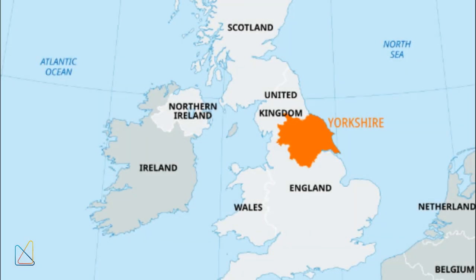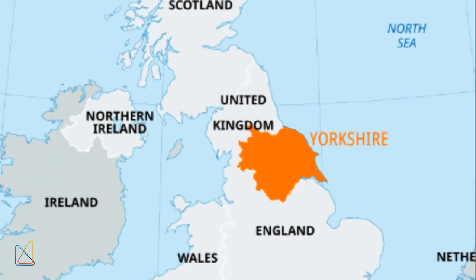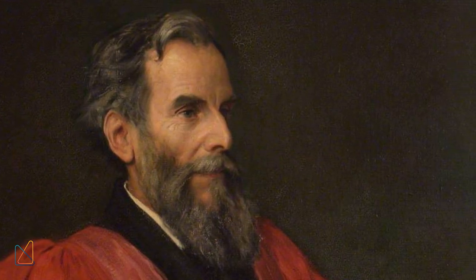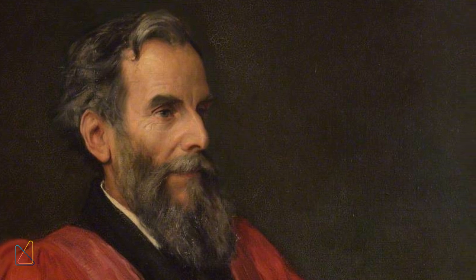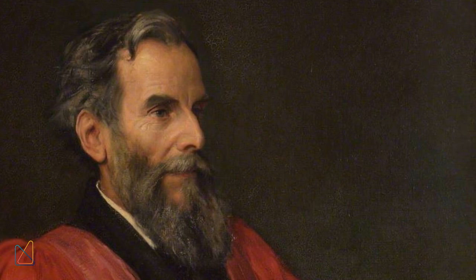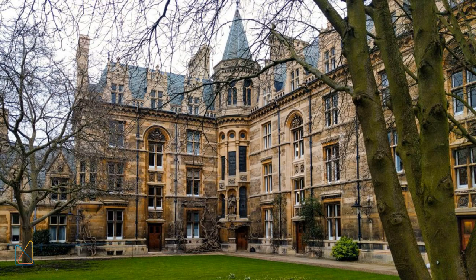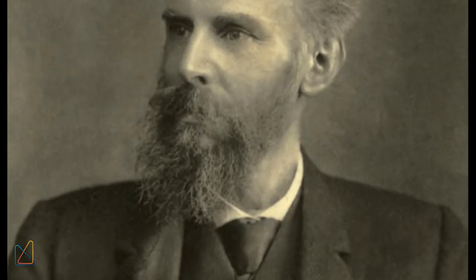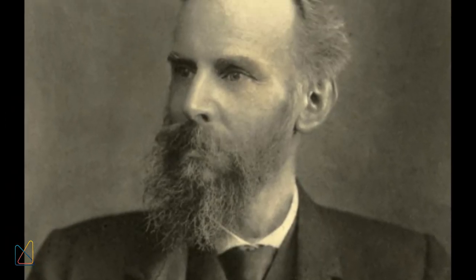John Venn was born on August 4, 1834, in Yorkshire, England. He grew up in a religious family, with his father being a prominent evangelical Christian. In 1853, Venn attended Highgate School in London and later went to Gonville and Caius College, Cambridge, where he studied mathematics. He graduated as 6th Wrangler in 1857, but initially turned away from mathematics, focusing on a career in the clergy.